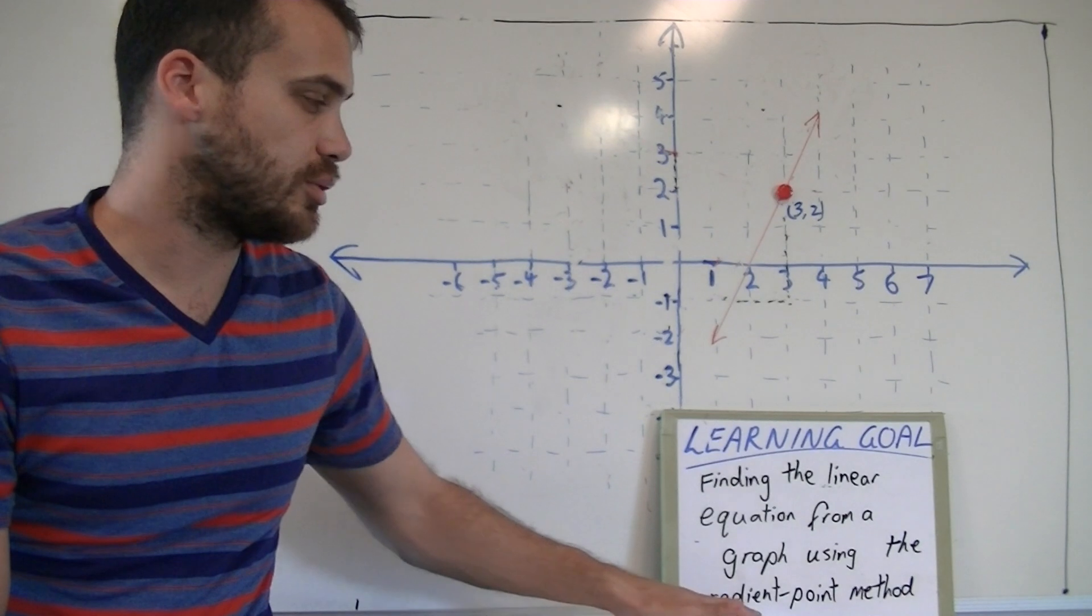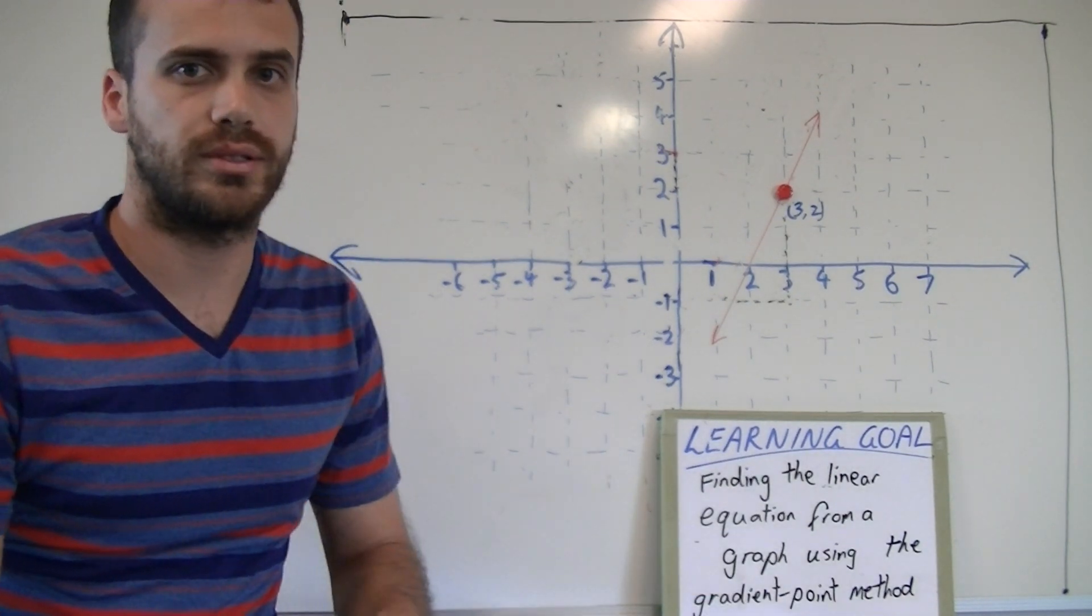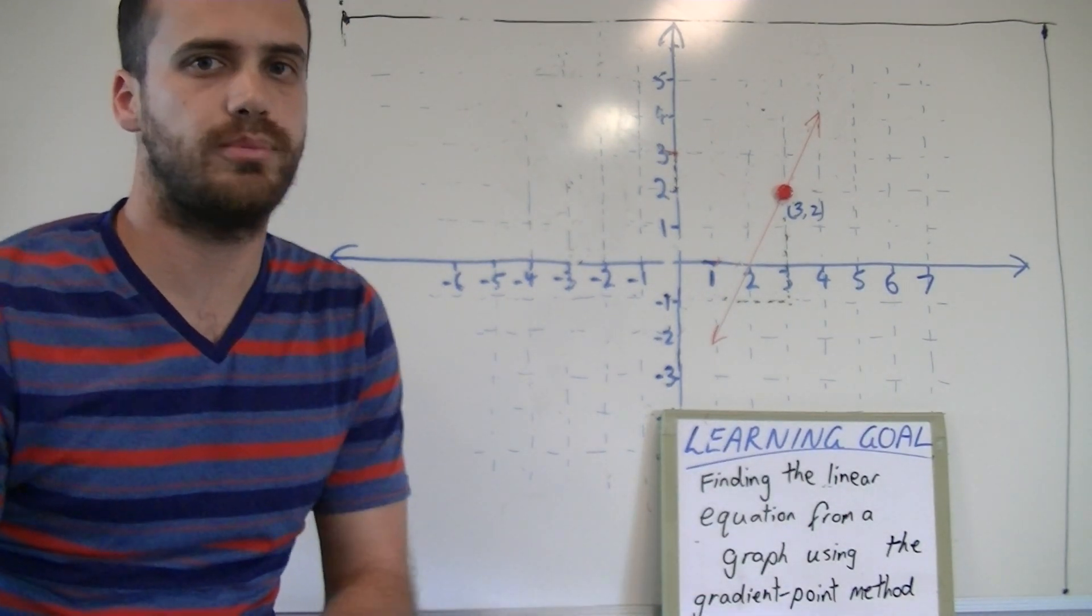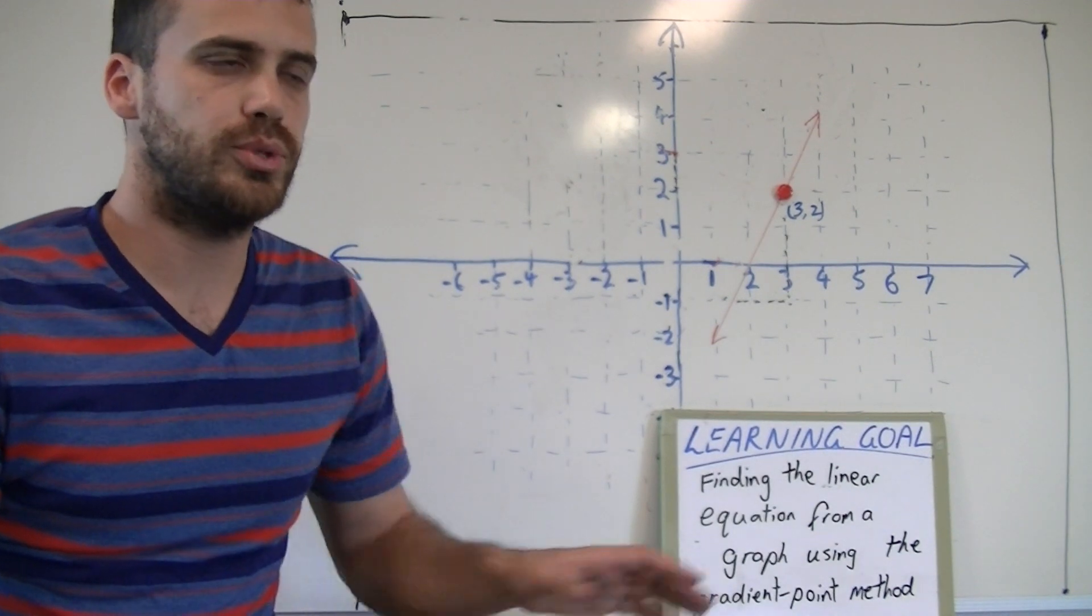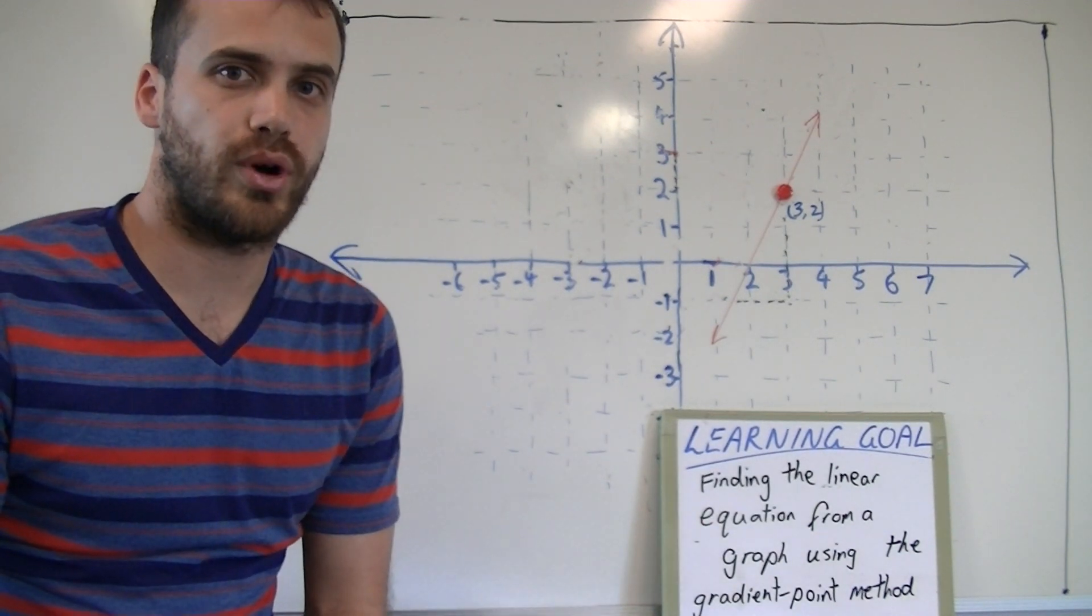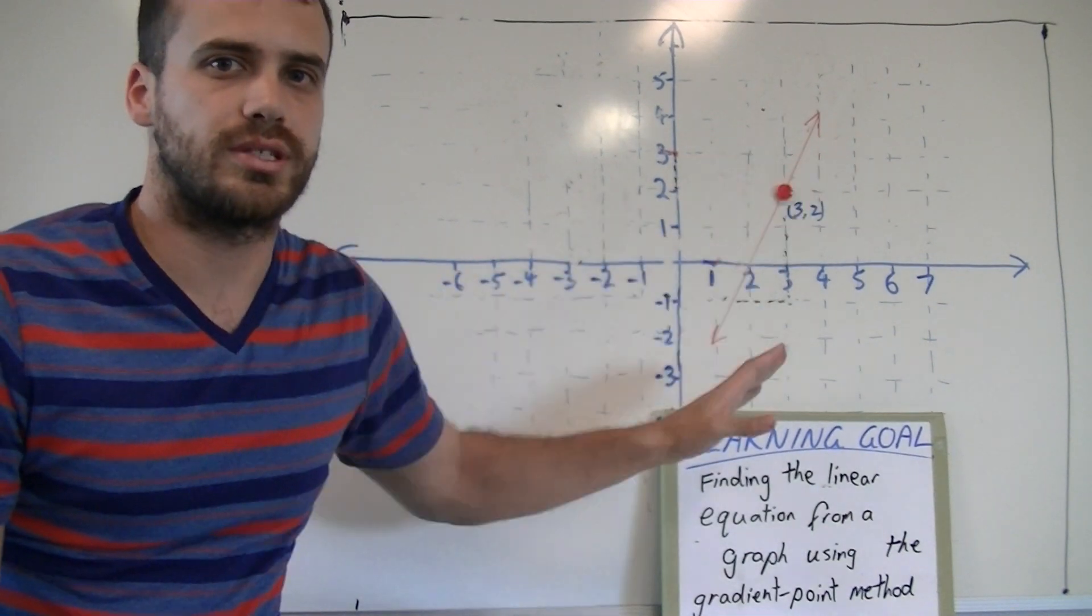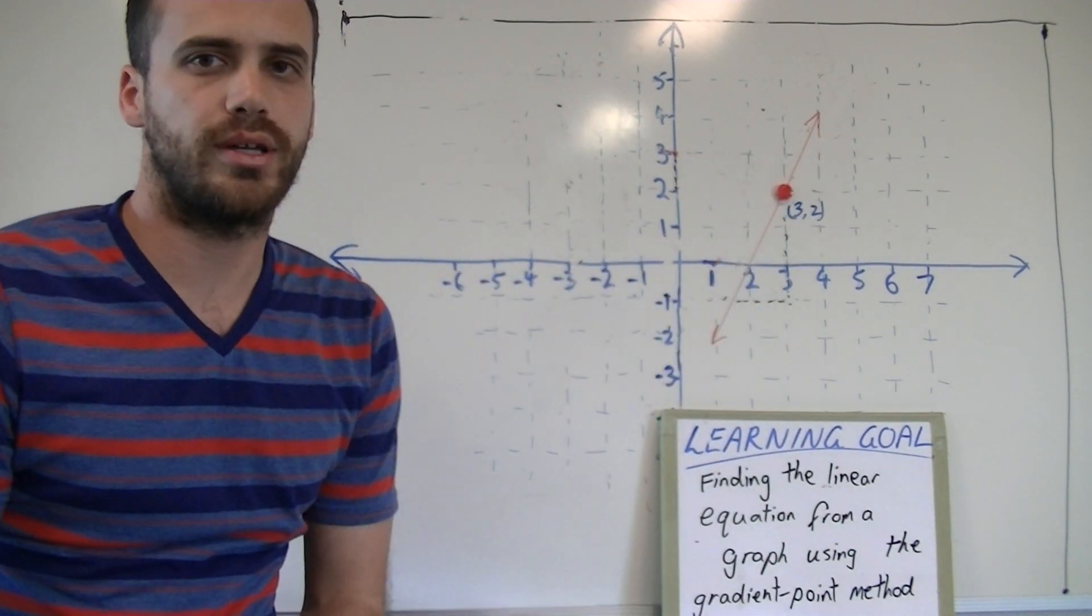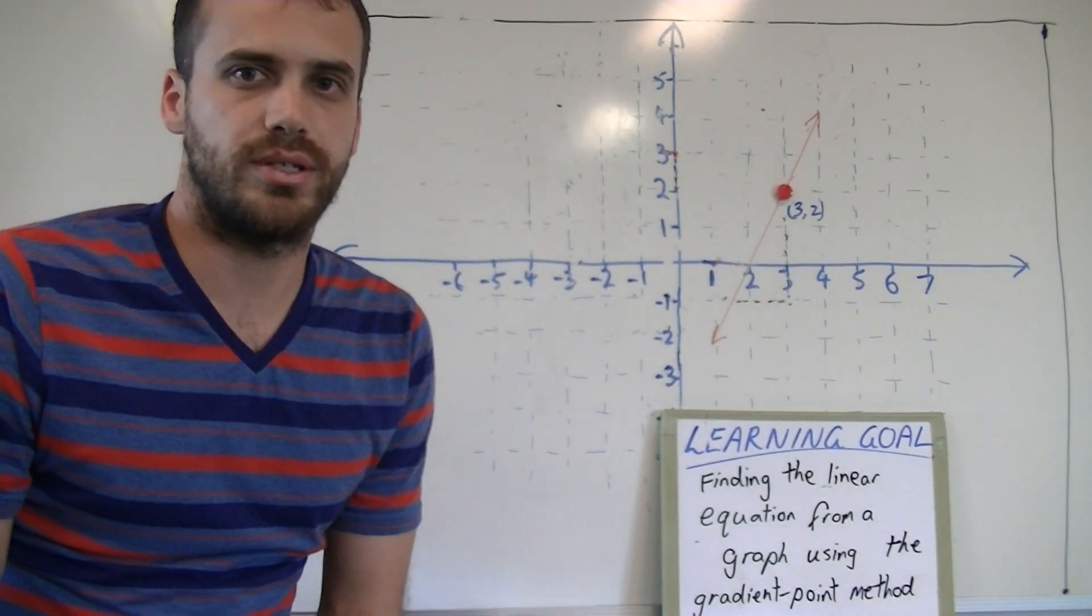Now this uses the gradient and a single point. It doesn't have to be the y-intercept, it can be any point at all. You would use this when you don't know what the y-intercept is. You can see that someone has drawn this line so that it doesn't cross that y-intercept, so I can't see what my y-intercept is.